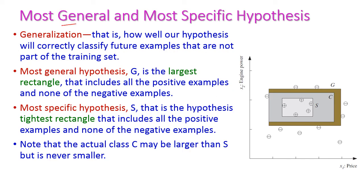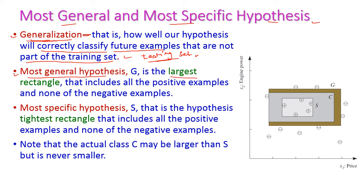Next is the most general and most specific hypothesis. Generalization is how well our hypothesis correctly classifies future examples that are not part of the training set — those belong to the testing set. The most general hypothesis G is the largest rectangle, the outermost rectangle. This area includes all positive samples and none of the negative samples. G is the outermost rectangle and is called the most general hypothesis.